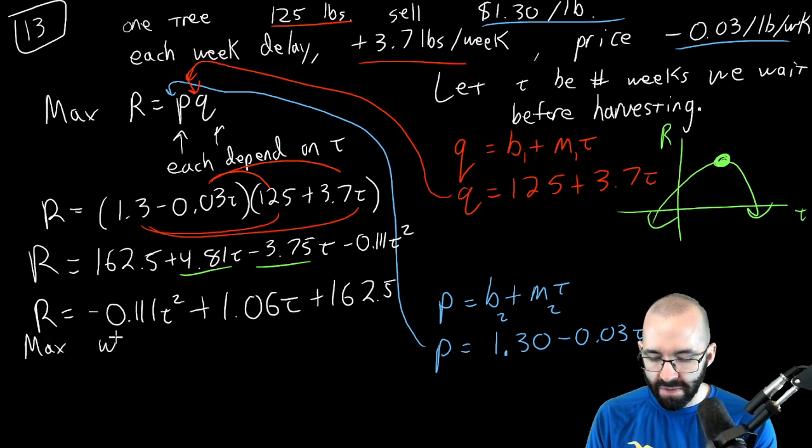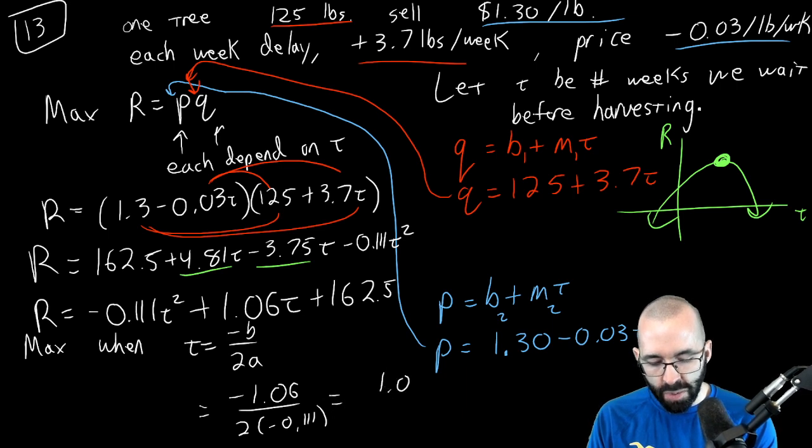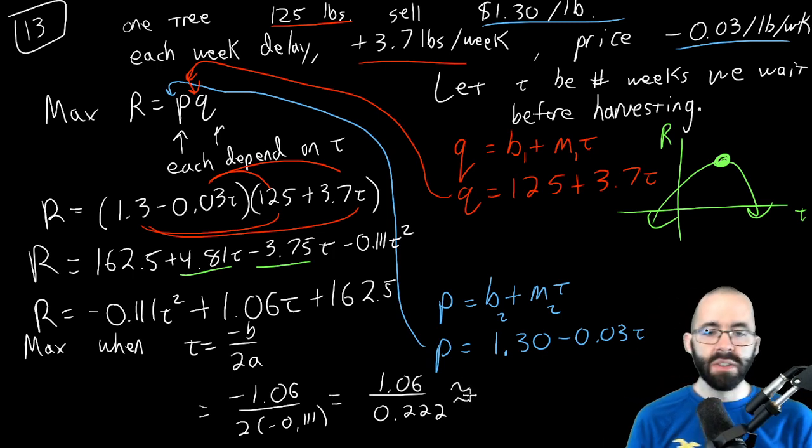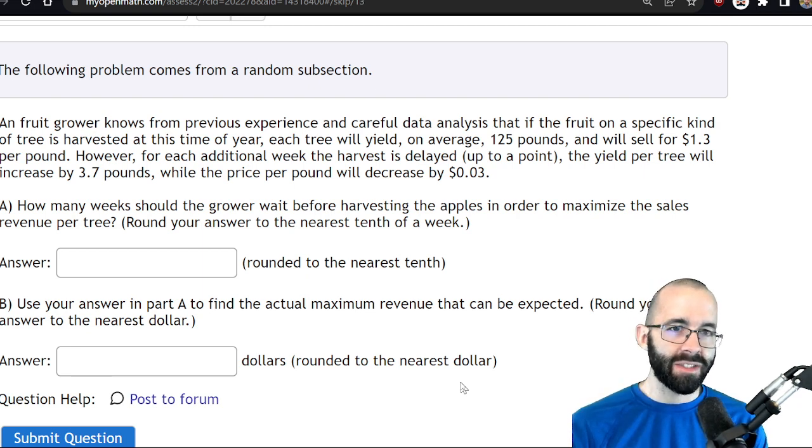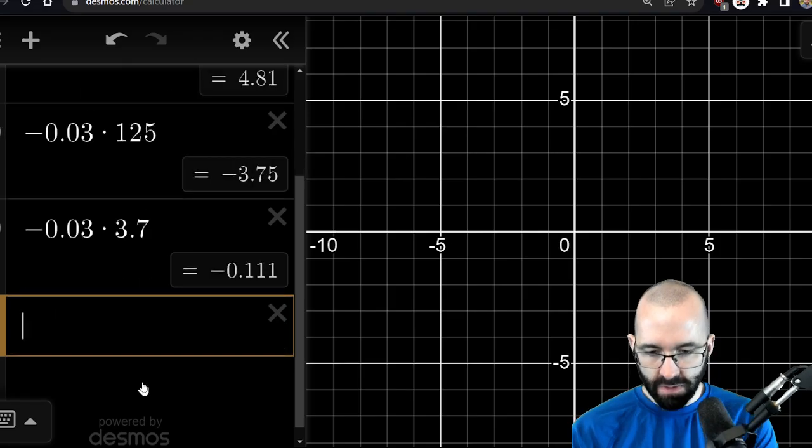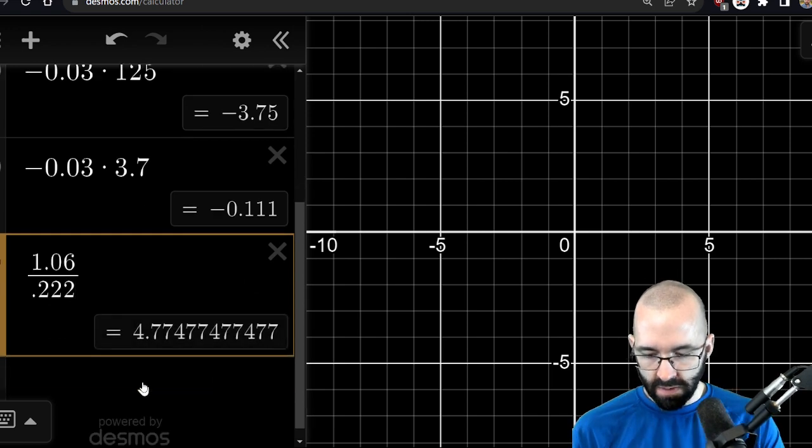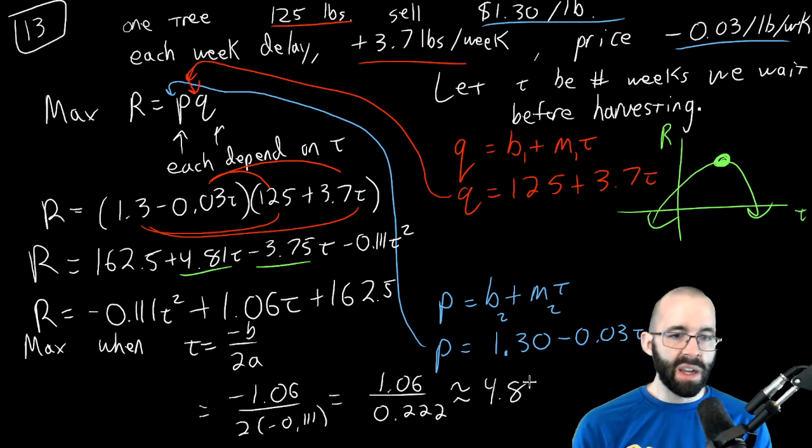So this is gonna be max when t is negative b over 2a. Negative 1.06 divided by 2 times negative 0.111. The negatives are gonna cancel, we get 1.06 divided by 0.222. Let's use a calculator and it told us to round to the nearest tenth of a week. Seventh of a week could make more sense, I guess that would be a little bit more complicated. 1.06 over 0.222, 4.8 about. So we should wait almost five weeks.